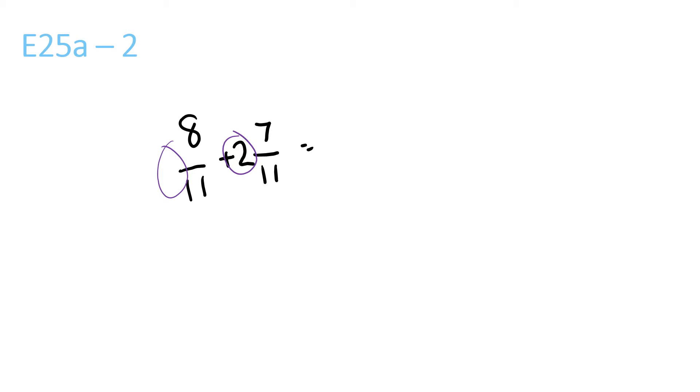2 plus nothing is 2. 8 plus 7 is 15 over 11. 11 goes into 15 once with a remainder of 4 over 11. 1 and 4 over 11 plus 2 is 3 and 4 over 11.